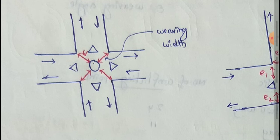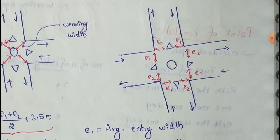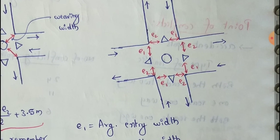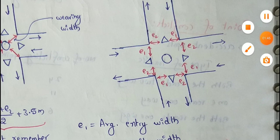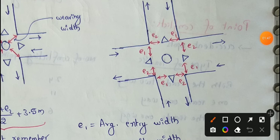Next, we are going to show this formula for weaving width. So first of all, let's check this junction. E1 is average entry and E2 is average exit.